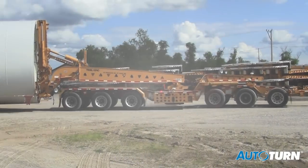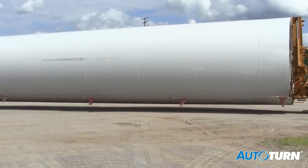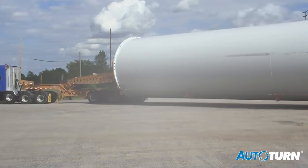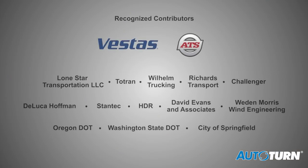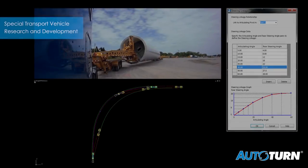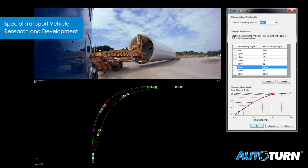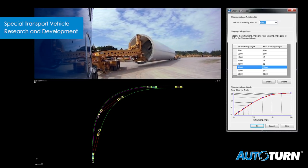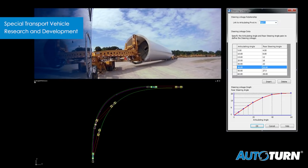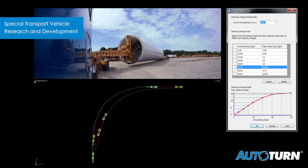To understand the turning characteristics of oversized and overweight vehicles, we engaged industry experts including specialized carriers and vehicle and wind turbine manufacturers. The findings led to new algorithms that support the intricate steering linkages between vehicle parts. Now, designers can create these vehicles to match their characteristics more easily.